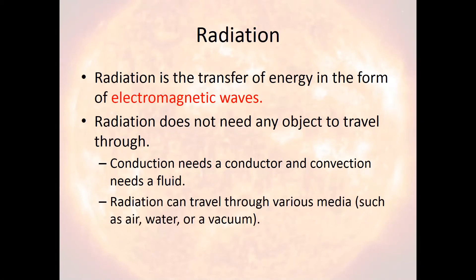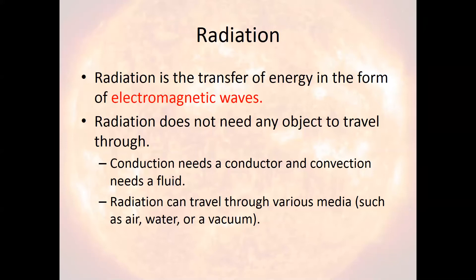But radiation can travel through other things as well. It can travel through air, hence our atmosphere. It can travel through water, through empty space, and through solid objects. There are many things that radiation can travel through, and different types of radiation can travel through different objects. We're going to talk more about that in the next lecture when we talk about what are called selective absorbers. But for now, let's talk a little bit more about how radiation works.